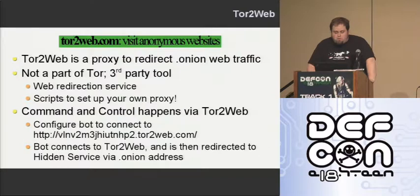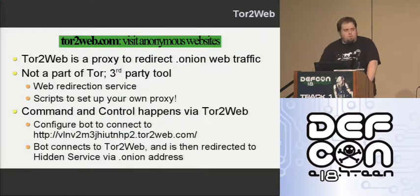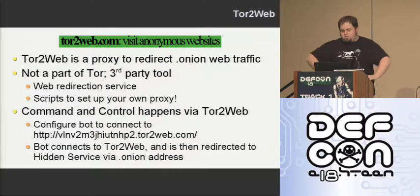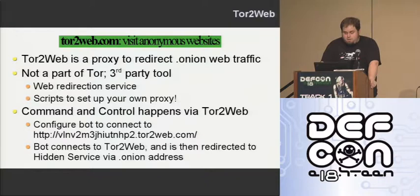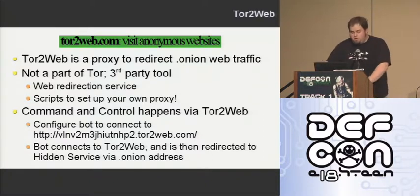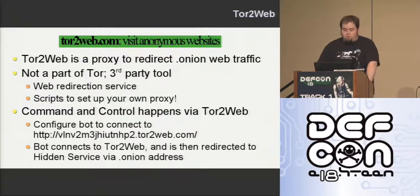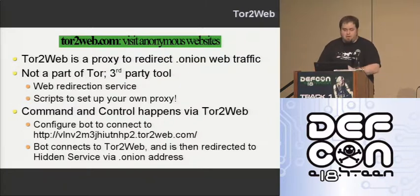We're going to be doing the command and control over Tor to Web. In the Zeus configuration we saw earlier, we configure the bot to connect to that URL. The first part of it is the hash from the dot onion domain dot tortoaweb.com — that would be your C2 server. The bot will connect to Tor to Web because it just sees it as a regular URL, then be directed through to the hidden service at the dot onion domain which is our command-and-control server. Very simple and very effective.